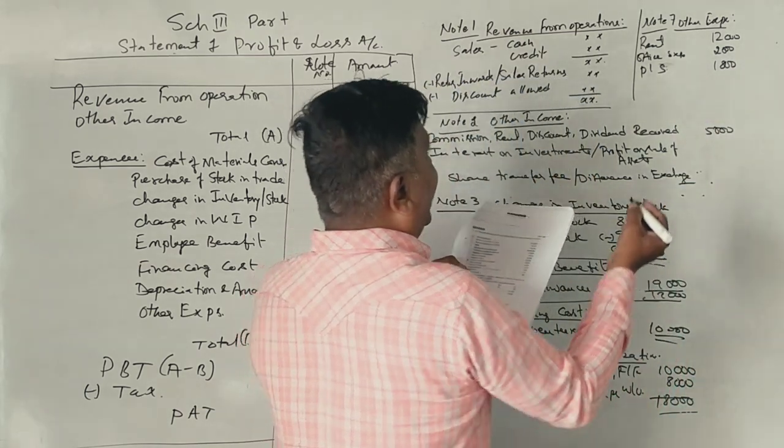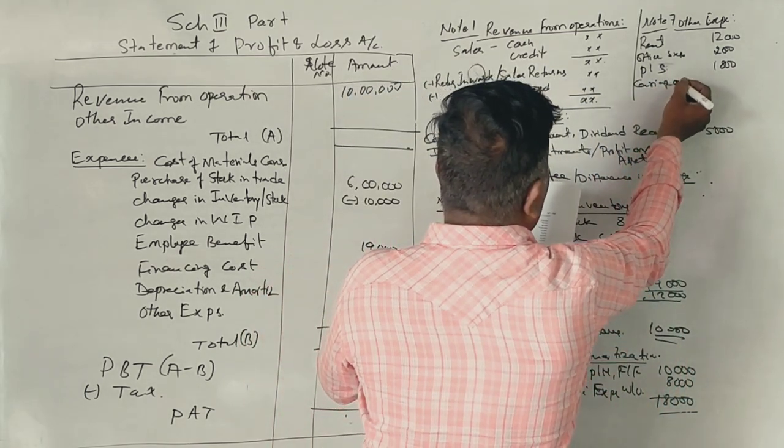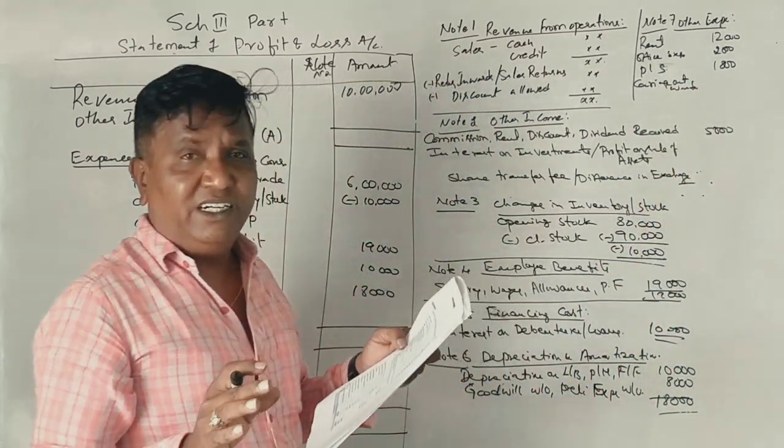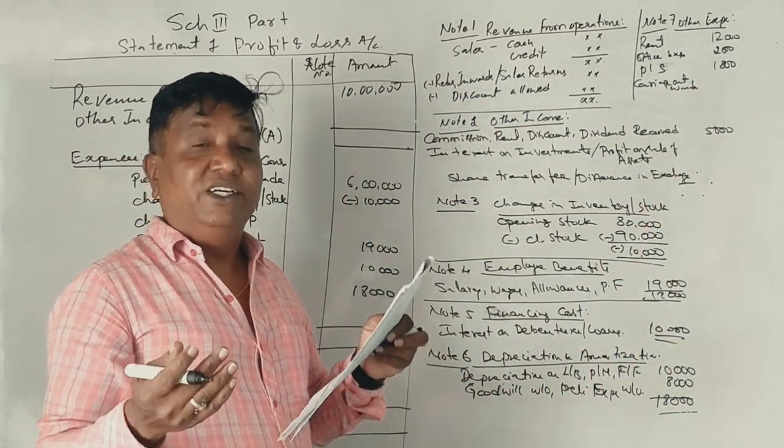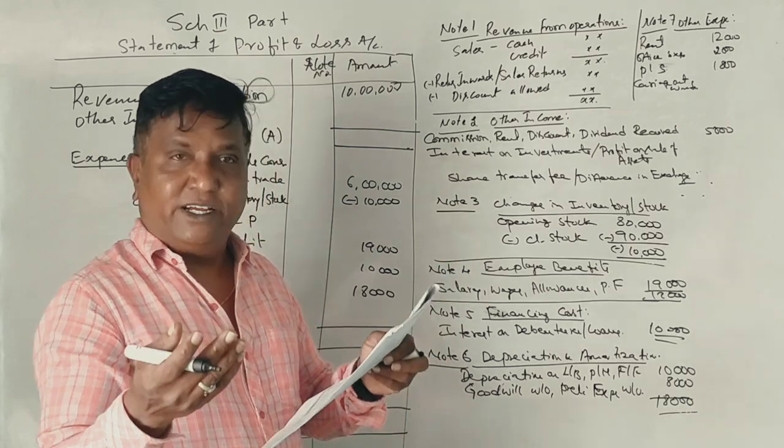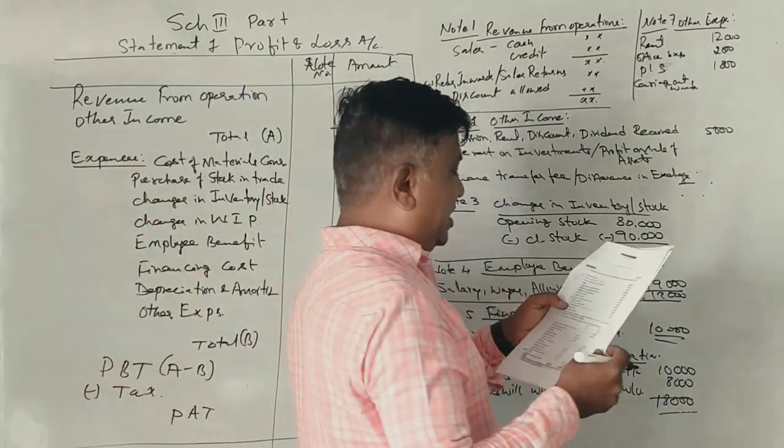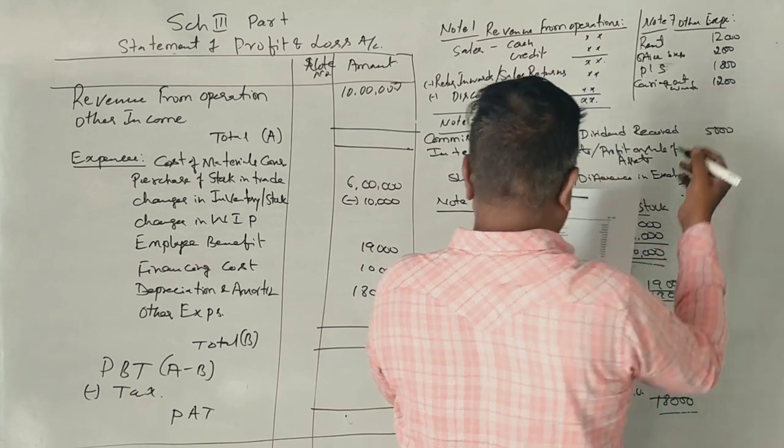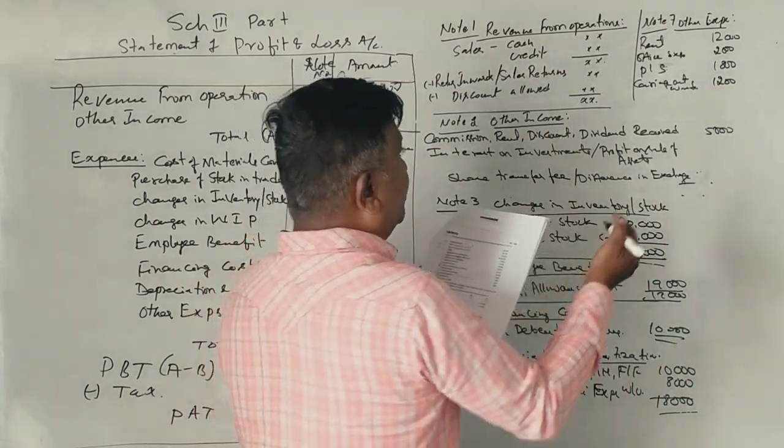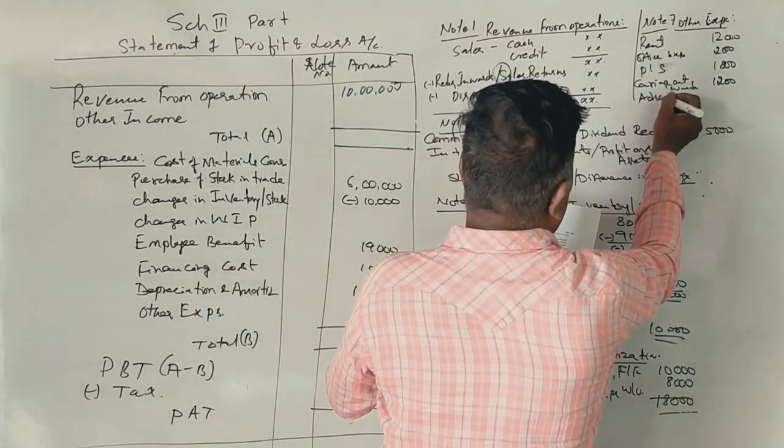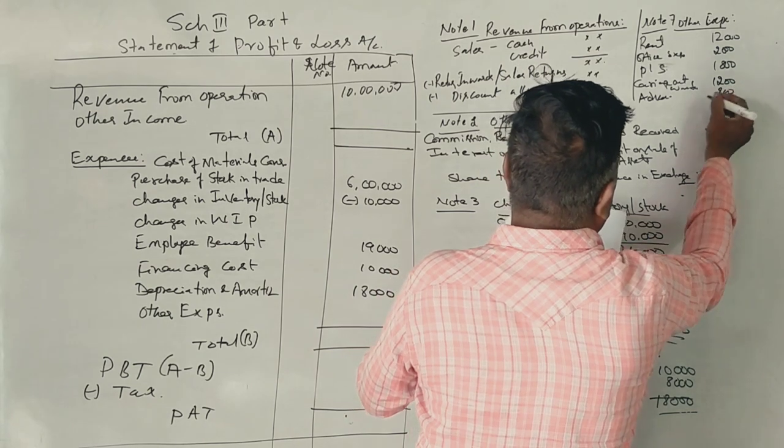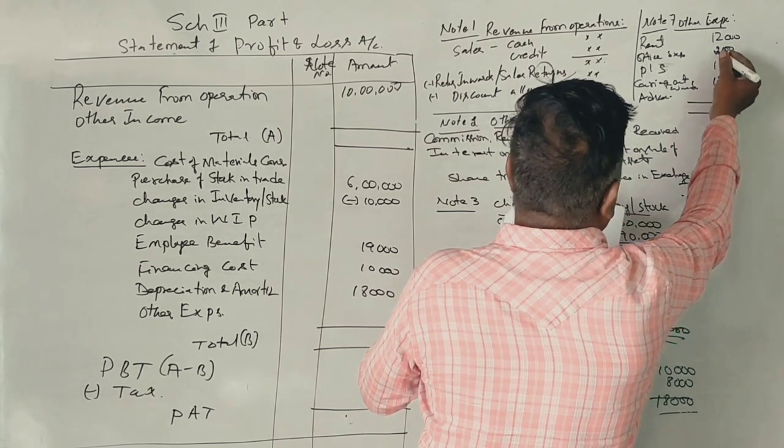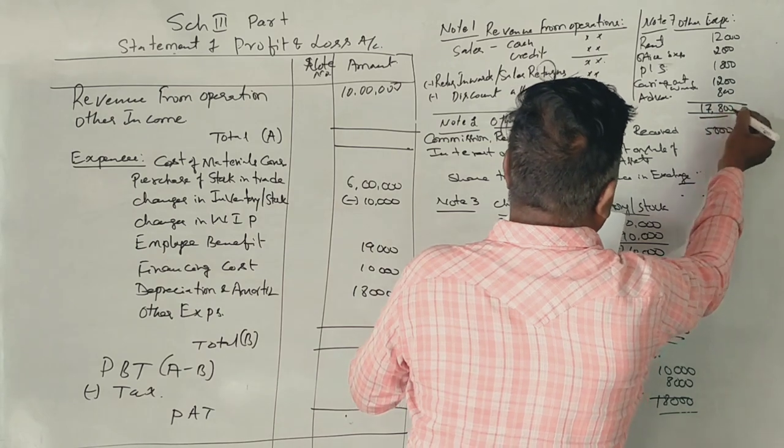Carriage outwards, other expenses, 1,800. Carriage outwards 1,800. Next, advertisement, other expenses, 1,800. Total money 1,800.